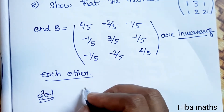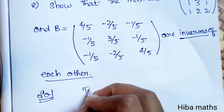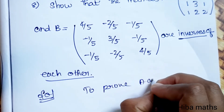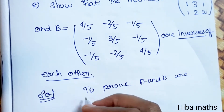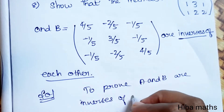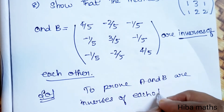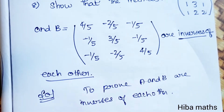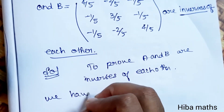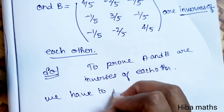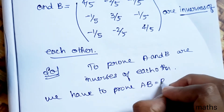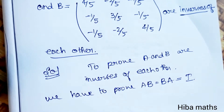In the solution, to prove A and B are inverses of each other, we have to prove A×B is equal to B×A is equal to I matrix.